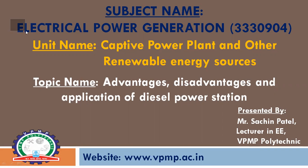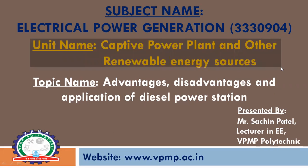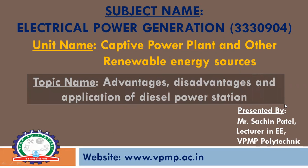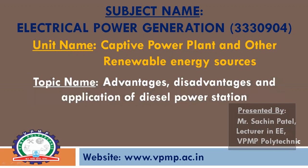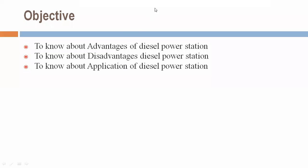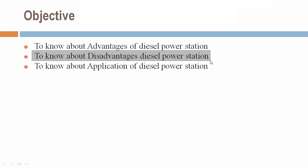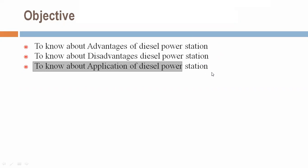Subject Name: Electrical Power Generation. Subject Code: 3330904. Unit Name: Captive Power Plant and Other Renewable Energy Sources. Topic Name: Advantages, Disadvantages and Application of Diesel Power Station. Myself Sachin Patel, Lecturer in Electrical Engineering, VPMB Polytechnic. The objective of today's lecture is to know about the advantages, disadvantages, and application of Diesel Power Station.